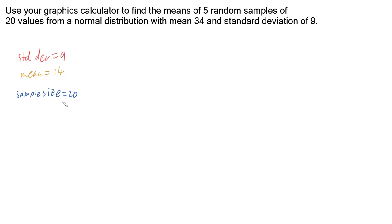And to do this in our graphics calculator we're going to use a function called RANNORM. This is for the Casio range of calculators. It gives us a random number mapped to a normal distribution and it takes the syntax where we put in the standard deviation, then the mean, then the sample size.